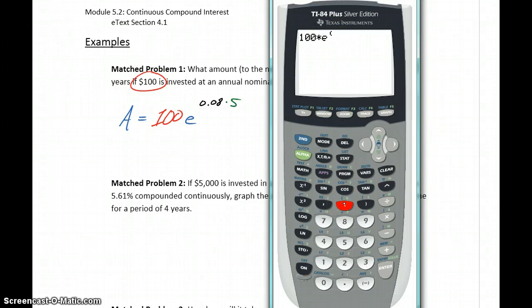Either way, it's a good idea to put everything that is in that exponent in a set of parentheses just to make sure order of operations are followed correctly. So this is going to be 0.08 times 5, and we can close those parentheses and press enter.